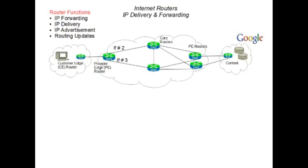Internet routers have several functions. Recall that IP routing is a connectionless service, so it is performed on a datagram basis and routing for each datagram is independent of the ones that precede and follow it. We can break the router functions down into four. There is a forwarding function, which means that as each router receives a packet on an incoming interface, it has to make decisions around which outgoing interface to use to forward the packet. The second function is delivery — the last router in the chain, the one that is connected to the host machines that is the destination, delivers the IP datagram.